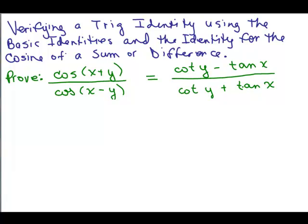Right off the bat, make sure you do not try to cancel the cotangent Y over cotangent Y, can't do that, can't cancel the tangent X's. Remember, only if it's factored can you do that. Similarly, cosine of X plus Y is not cosine of X plus cosine of Y, you have to use the identity.